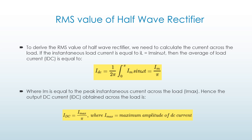RMS value of half wave rectifier. To derive the RMS value of a half wave rectifier, we need to calculate the current across the load. If the instantaneous load current is IL equal to IM sin(omega t), then the average load current IDC is equal to 1 upon 2pi, integral 0 to pi of IM sin(omega t), which equals IM upon pi.